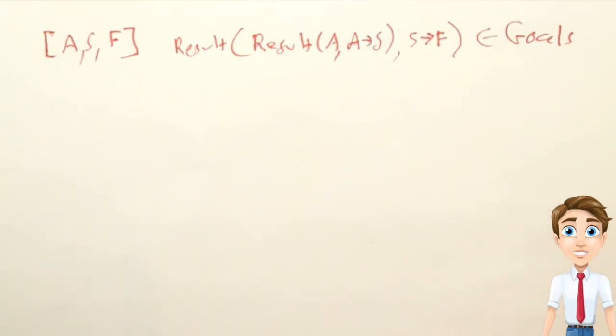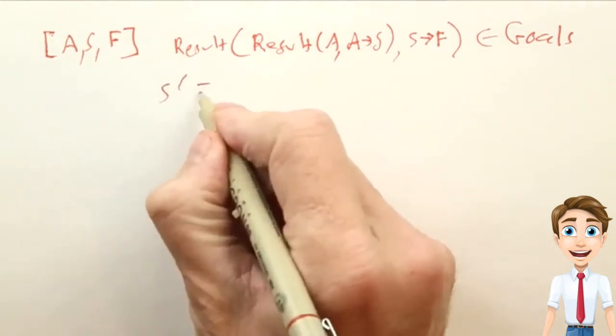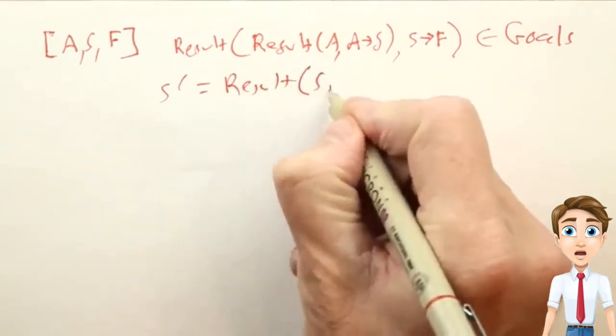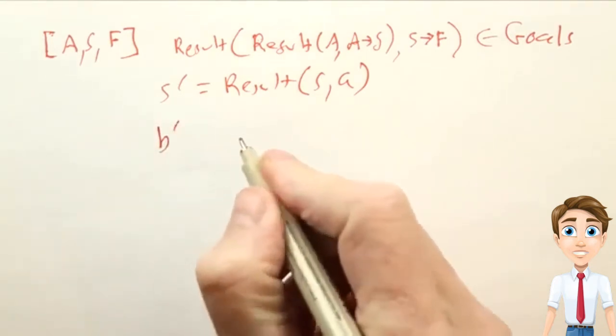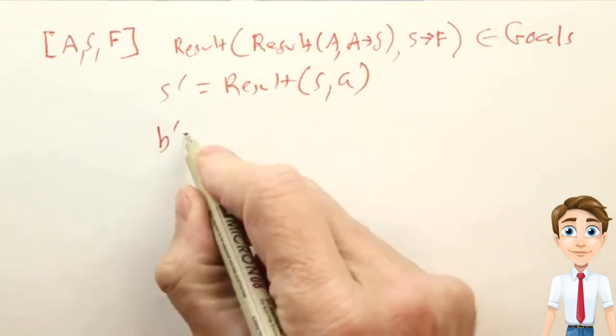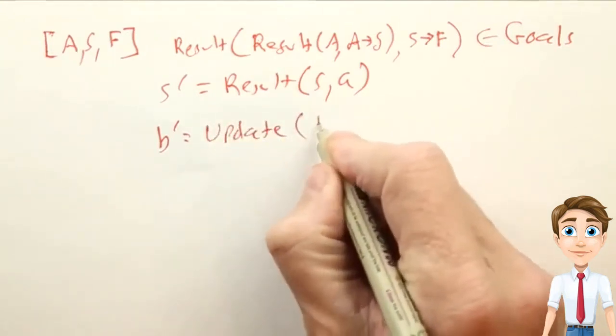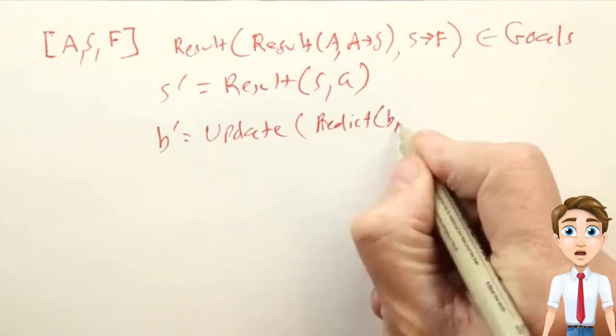Now, in stochastic, partially observable worlds, equations are a little bit more complicated. Instead of just having S prime as a result of applying some action to the initial state, we're dealing with belief states rather than individual states. And what we say is our new belief state is a result of updating what we get from predicting what our action will do.